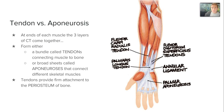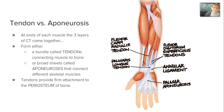At the ends of each muscle, those three layers of connective tissue come together and form either a bundle called a tendon that connects muscle to bone, or a broad sheet called an aponeurosis that connects different skeletal muscles — like the palmar aponeurosis. Tendons provide firm attachment by hooking onto the periosteum of bone, while aponeuroses are broad sheets that connect skeletal muscle to skeletal muscle.